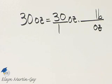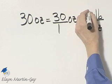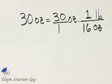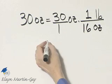and I end up with pounds. So I want pounds in the numerator, ounces in the denominator, and a unit fraction must equal 1. We know that 1 pound is 16 ounces, so there's my unit fraction that I'll use.